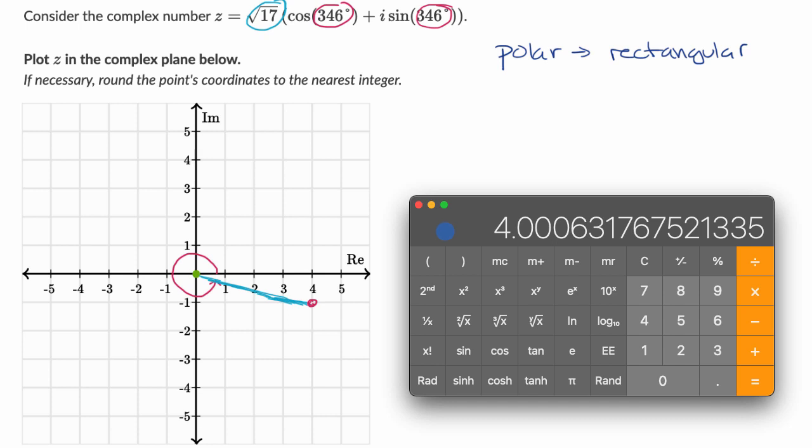And now let's do the imaginary part. So we have 346 degrees, and we're gonna take the sine of it, and we're going to multiply that times the square root of 17, times 17 square root, which is equal to, yup, if we round to the nearest integer, it's about negative one.